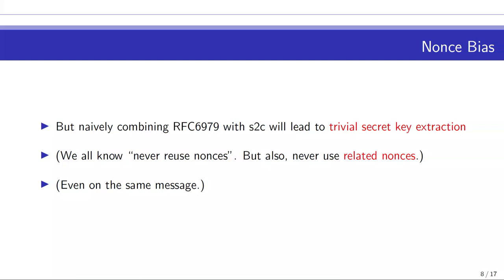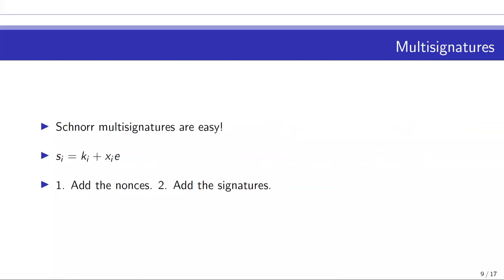Moving on to multi-signatures. We can think of the nonce problem as a precursor — we're going from a single entity producing a signature to a hardware wallet and host jointly producing one, and that's where things start to go off the rails. Intuitively, we love Schnorr multi-signatures because of the linear structure: everybody chooses a random nonce in step one, everyone adds their nonces together and hashes the result in step two, then everyone produces signatures and adds those together. Great — you have a multi-signature with no crazy new protocols, no extra crypto, no additional rounds of communication.